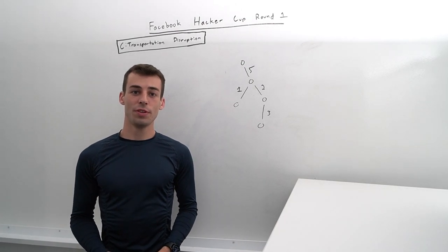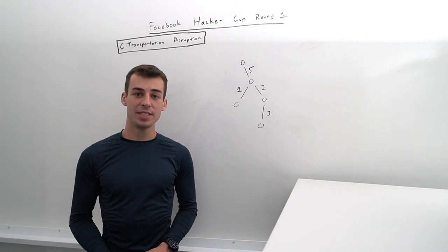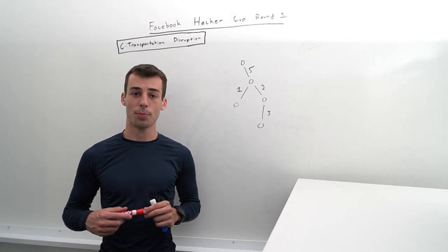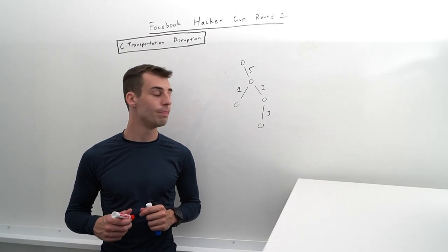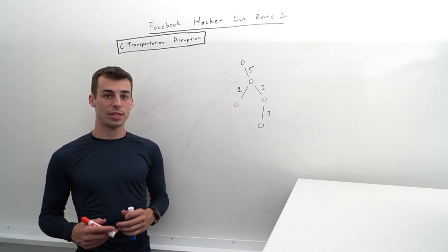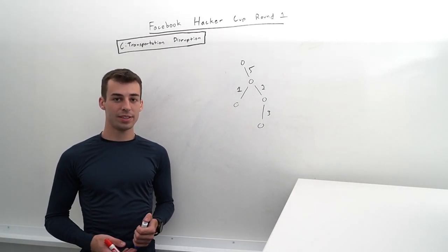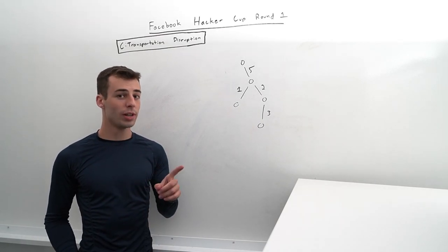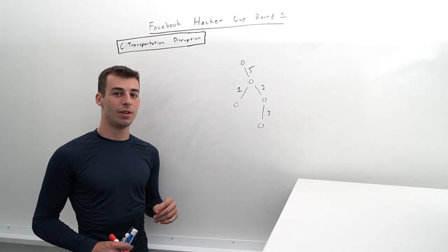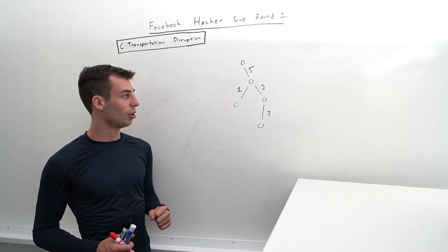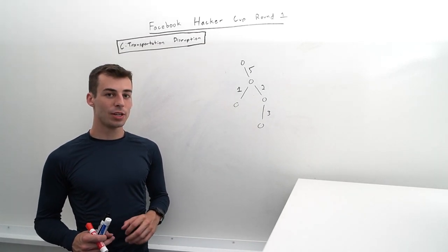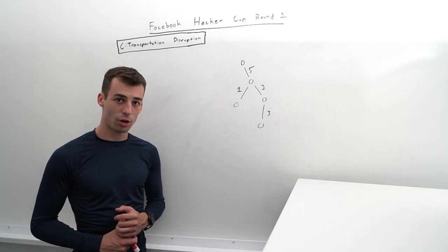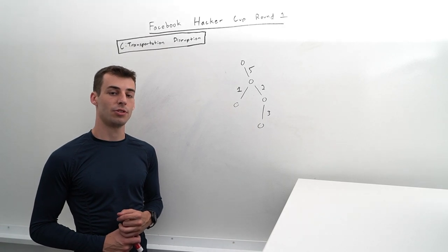Good morning, welcome to the solution video for problem C of the 2021 Facebook Hacker Cup round one. In this problem we're given a weighted tree where every edge has a weight between 1 and 20 — a very strict requirement on these weights — and we want to ship some materials between every pair of nodes in this tree.